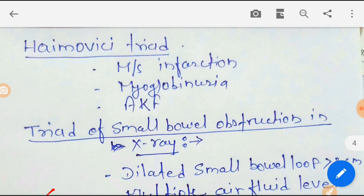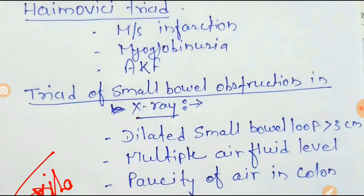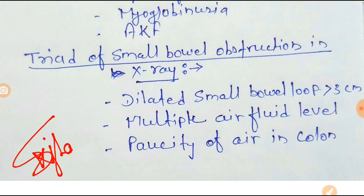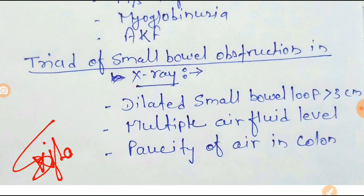Next is the crush syndrome triad: muscle infarction, myoglobinuria, and acute kidney failure. Then the triad of small bowel obstruction on X-ray: dilated small bowel loop more than 3 cm, multiple air-fluid levels, and paucity of air in the colon. On X-ray, a single bubble indicates obstruction at the pylorus, double bubble at the duodenum, and multiple bubbles indicate obstruction beyond that.